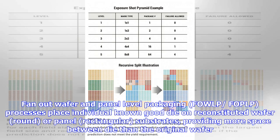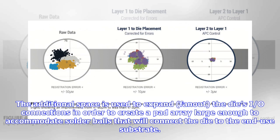Fan-out wafer and panel level packaging processes place individual known good die on reconstituted wafer, round, or panel, rectangular, substrates, providing more space between die than the original wafer. The additional space is used to expand or fan-out the die's I/O connections in order to create a pad array large enough to accommodate solder balls that will connect the die to the end-use substrate.